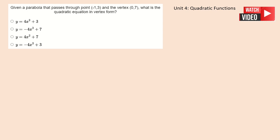In this video, you're being asked to identify which equation in vertex form is a parabola that goes through the point negative 1, 3, and the vertex 0, 7.